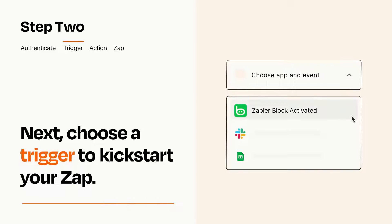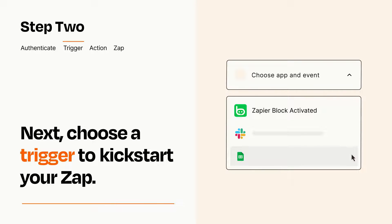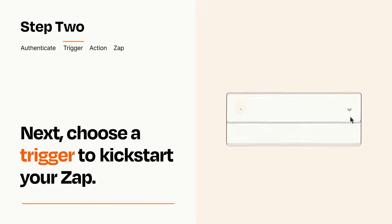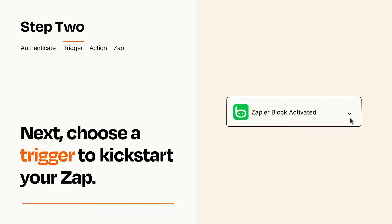Now let's set up your trigger, which is the event that starts your Zap. Pick the trigger event that you want from the list. When you set up this step, your Zap will pull in test data from your trigger app that you'll see later when setting up your action app.